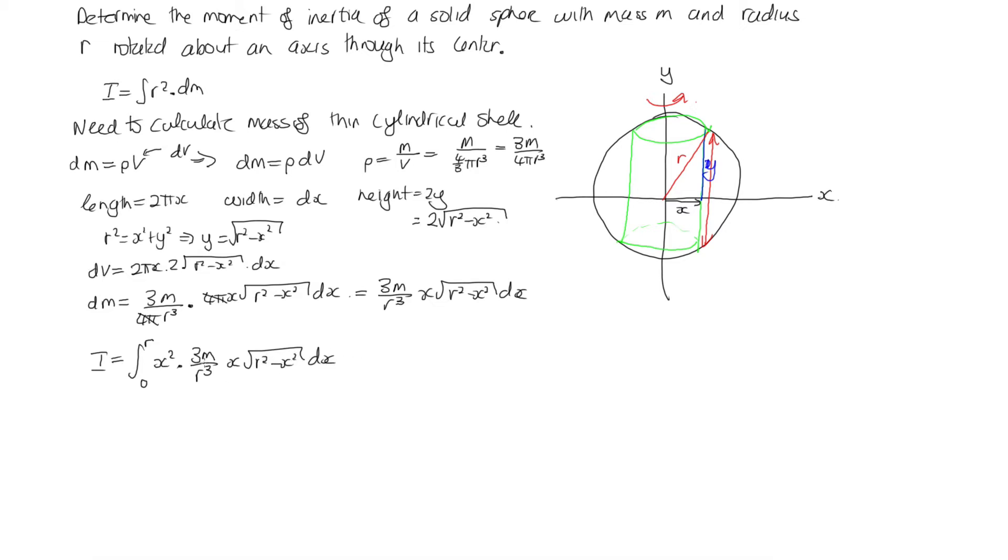And I can pull the 3m over r³ out the front. So this is 3m over r³ times the integral from 0 to r of x³√(r² - x²) dx. So I can now evaluate this integral on Mathematica or Maple.